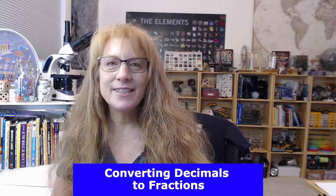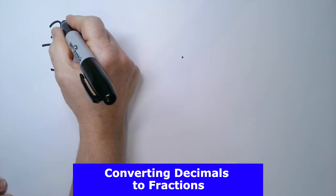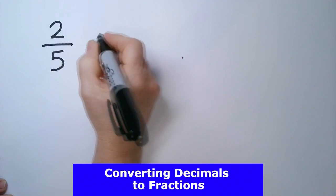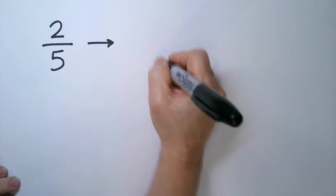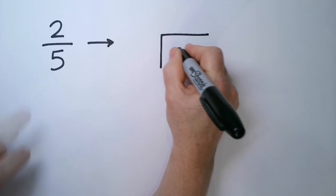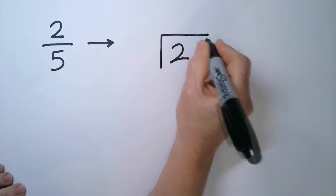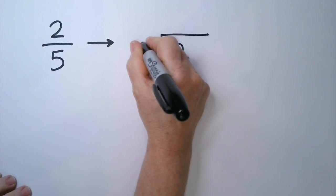Let's learn how to convert fractions to decimals. I have a fraction and I want to convert it into a decimal number. So I'm going to take the numerator and put it inside my division box. My denominator goes outside.